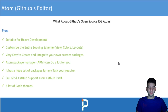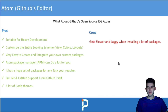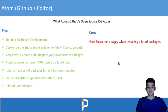Atom also has a lot of code themes — whatever theme you think of is likely available. Now for Atom's cons: it gets slower and laggier when you install a lot of packages, especially in your workspace. It can get super slow, and you may need to disable packages you don't need.